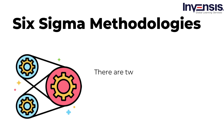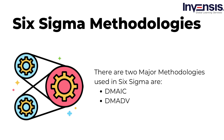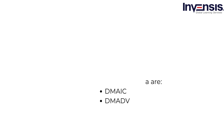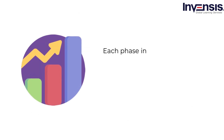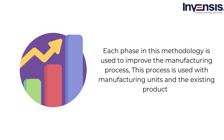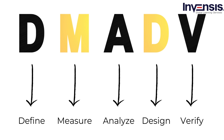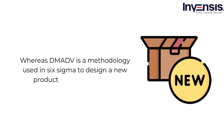There are two major methodologies used in Six Sigma: DMAIC and DMADV. DMAIC stands for Define, Measure, Analyze, Improve, and Control. Each phase in this methodology is used to improve the manufacturing process, and it is used with manufacturing units and existing products. DMADV stands for Define, Measure, Analyze, Design, and Verify. DMADV is a methodology used in Six Sigma to design a new product in an organization.